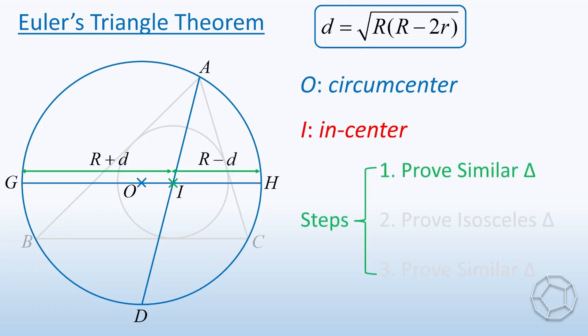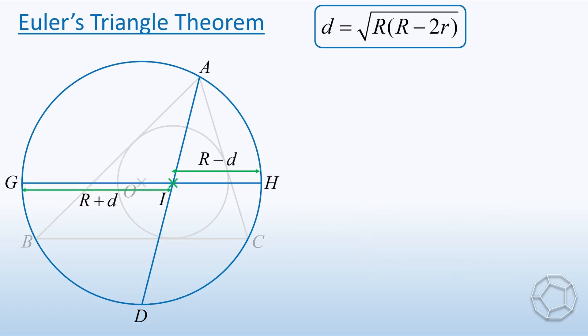In our step one, we need to prove similar triangles. Which two triangles should we consider? Now construct the sides AG and HD. Let's look at the two blue triangles.